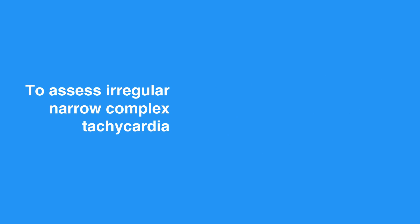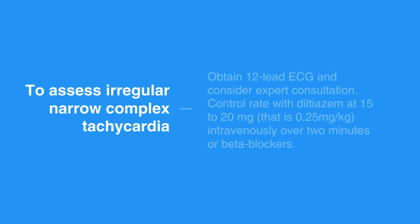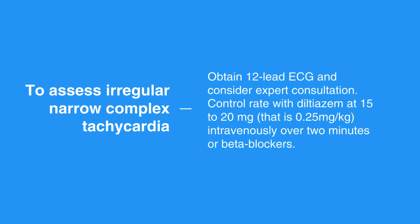To assess irregular narrow complex tachycardia, or probable AFib, obtain a 12-lead ECG and consider expert consultation. Control rate with diltiazem at 15–20 mg (0.25 mg/kg) intravenously over 2 minutes, or beta blockers.